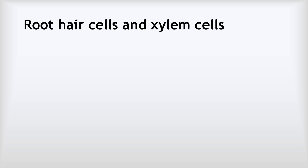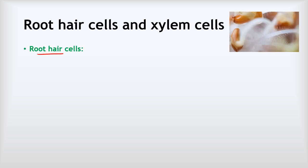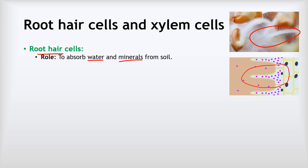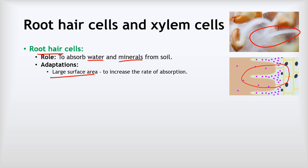Let's start by looking at root hair cells and xylem cells. If you look very closely at the root of a plant, you'll see it is covered in these very fine hairs. Each one of those hairs is an individual root hair cell. Their job is to absorb water and minerals from the soil for the plant to use. The first important adaptation is they have a large surface area - that long hair gives it a really big surface area, which increases the rate that they can absorb the water and the minerals.